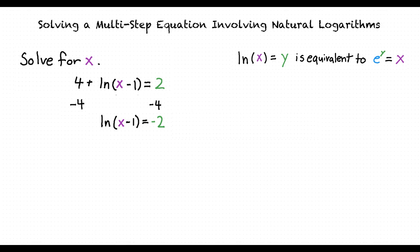Okay, so applying this rule to our problem, we will find that ln of x minus 1 equals negative 2 is equivalent to e to the negative 2 equals x minus 1. That's right.